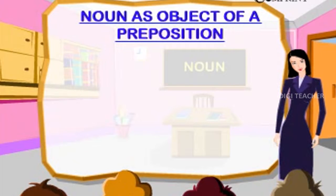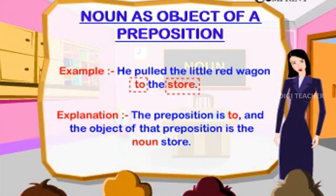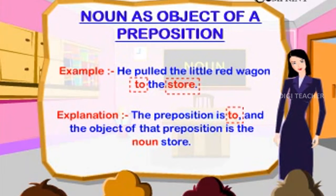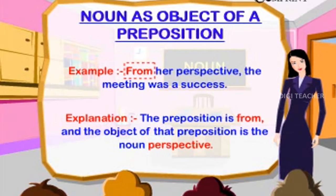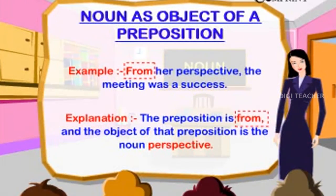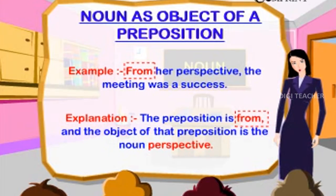Noun as Object of a Preposition. Example: He pulled the little red wagon to the store. The preposition is 'to' and the object of that preposition is the noun. Example: From her perspective, the meeting was a success. The preposition is 'from' and the object of that preposition is the noun 'perspective'.